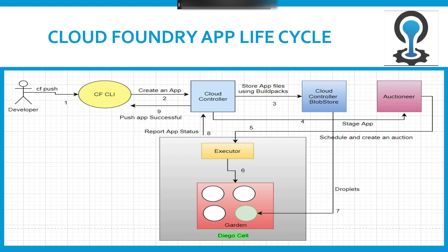Once the Garden container is created, Garden will download the droplet from the blob store. The droplet is nothing but the application which was stored via the Cloud Controller. Once downloaded, the application starts running in the Garden container. When this task is done, Diego sends a report of the running application to the Cloud Controller, which then notifies the CLI that the app has been created.